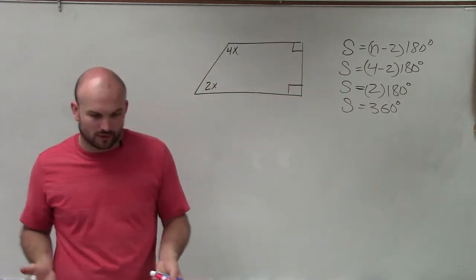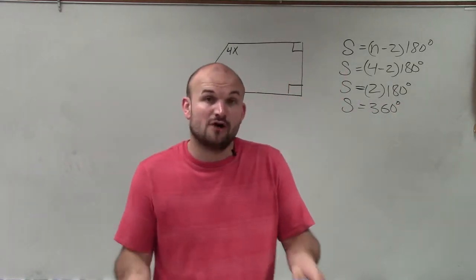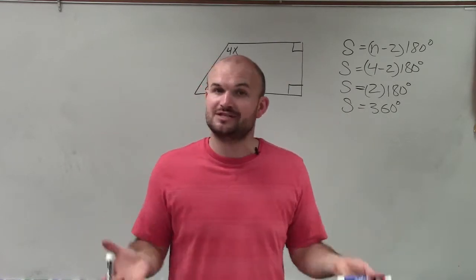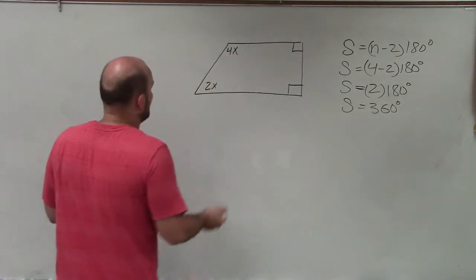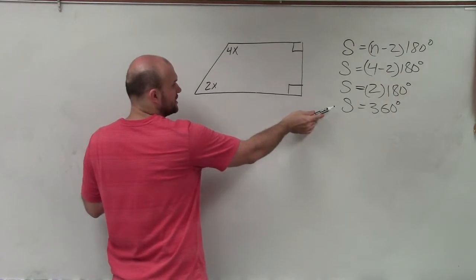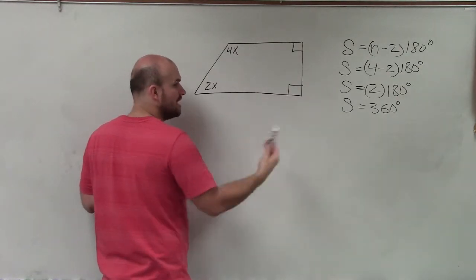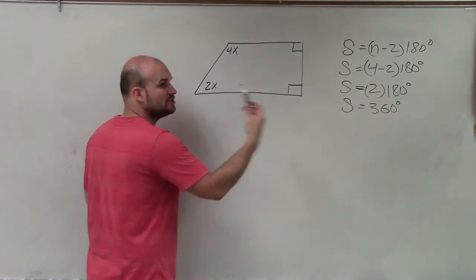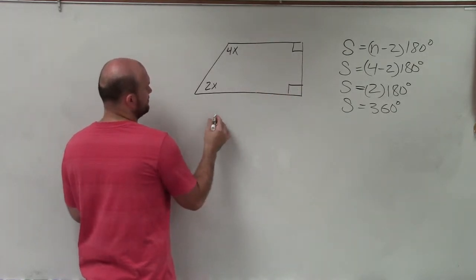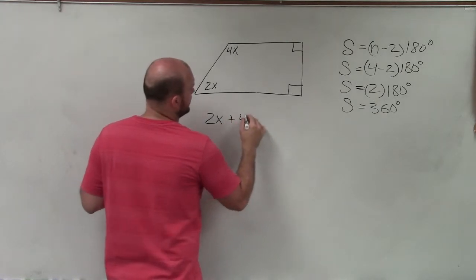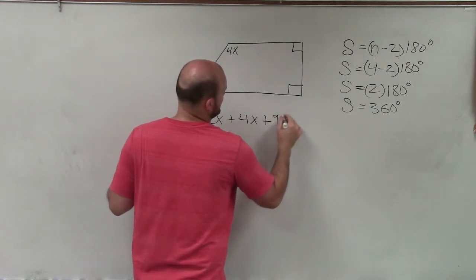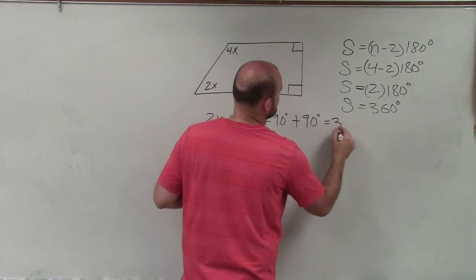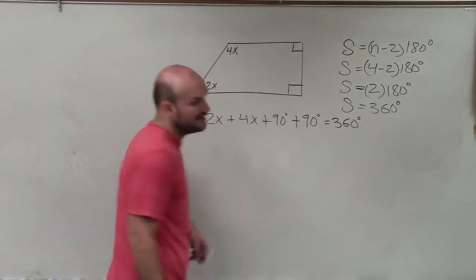Now, whenever we have a variable, the main important thing is we want to solve for that variable. So we need to set up an equation. We need to write an equation. So what I notice is the sum of all these angles is 360 degrees. That means, remember, sum is addition. This plus this plus this plus this is going to equal 360 degrees. So I'll simply write 2x plus 4x plus 90 degrees plus 90 degrees equals 360 degrees.